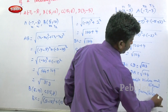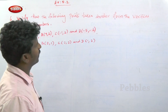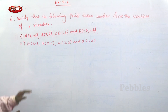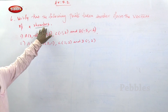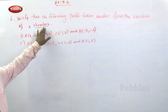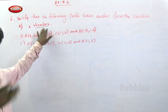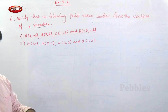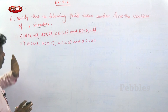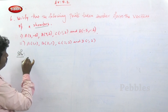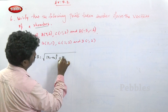The sixth question: verify that the following points taken in order form the vertices of a rhombus. For a rhombus, all sides are equal. That is the key property — all four sides must be equal. We will calculate AB, BC, CD, and DA using the distance formula.